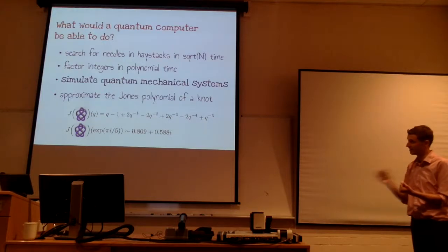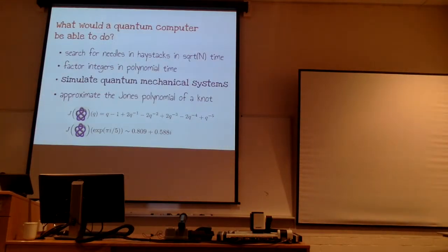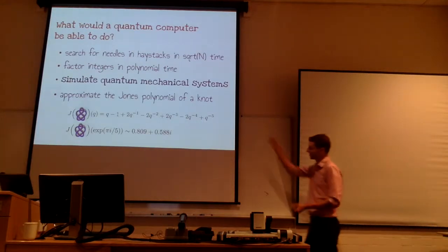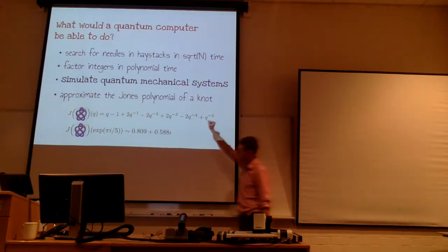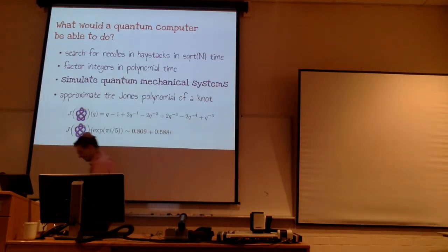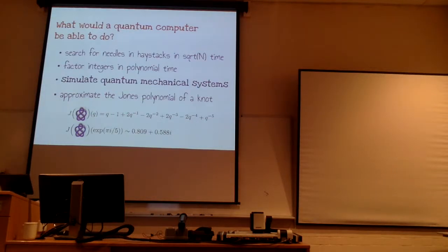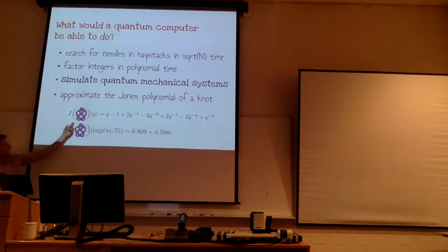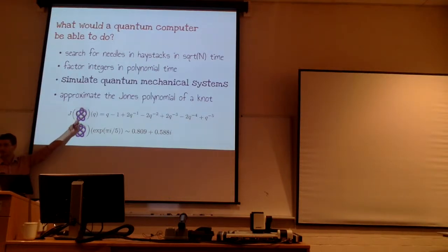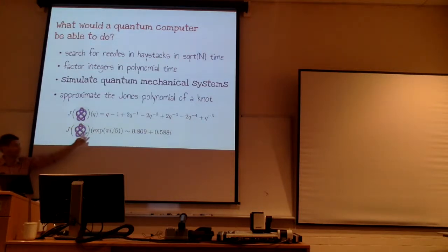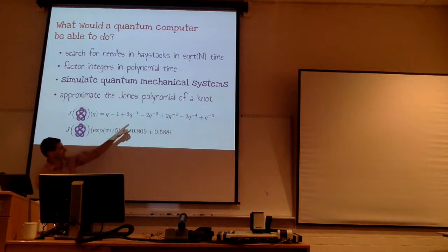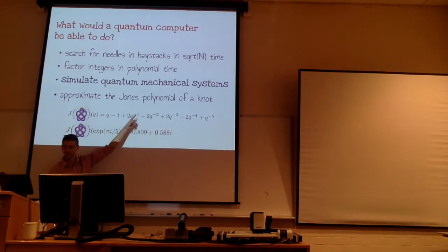Now, the fourth one is the most important one of all: we can use a quantum computer to approximate the Jones polynomial of a knot. Tonight I'm not going to tell you exactly what the Jones polynomial is. But as a black box — here's a little picture of a knot, just a tied-up closed loop embedded in space — there's some construction called the Jones polynomial that takes a knot and spits out a polynomial.